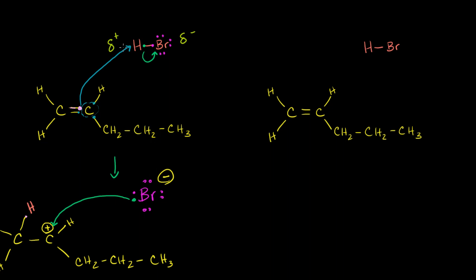We said this hydrogen is going to be partially positive because the bromine is so electronegative. And maybe when it's partially positive, it'll bump into one of these carbons and swipe its electron. We somewhat arbitrarily decided it would swipe this carbon's electron, but you could just as easily imagine a world where it swipes an electron from the other carbon.